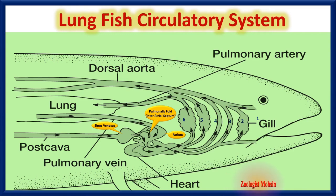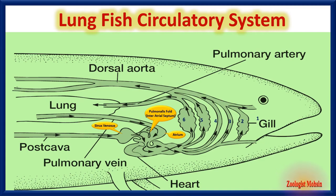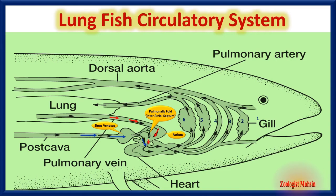In the diagram you can notice a small septum hanging in the atrium, called the pulmonalis fold or inter-atrial septum. This septum separates oxygenated blood coming from the lungs and deoxygenated blood coming from the sinus venosus. Although it is not complete separation, it still helps keep both types from mixing because the flow is quick and little time is allowed for mixing.